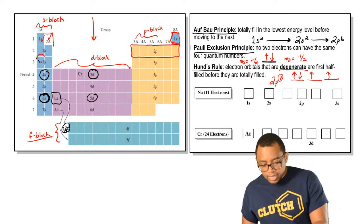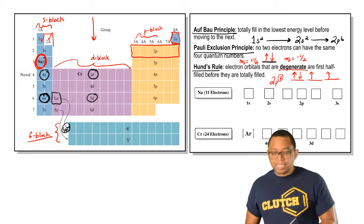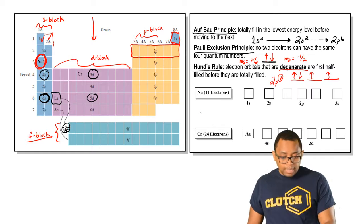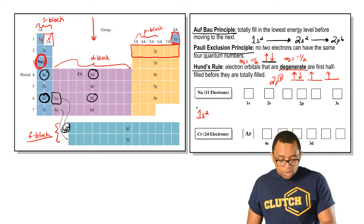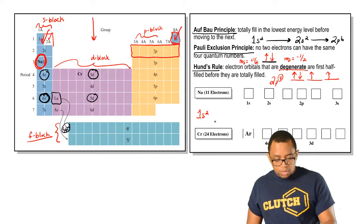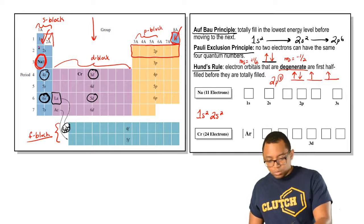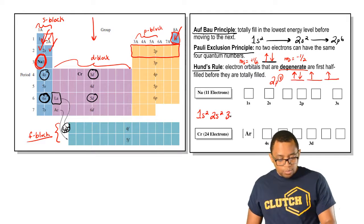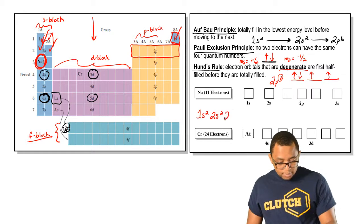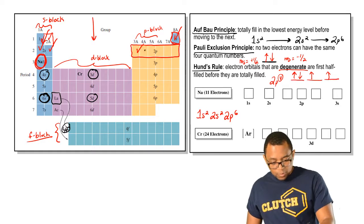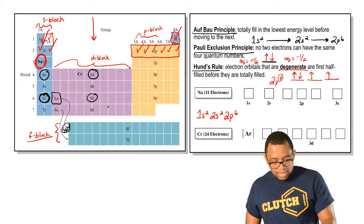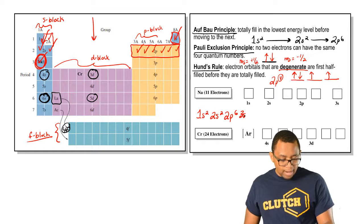If we take a look here, we have sodium right here, so we're going to just count to sodium. We're going to say that is 1S2, 1, 2, 2S2, 2P6 because we count all the way through, and then 3S1 lands us right there.